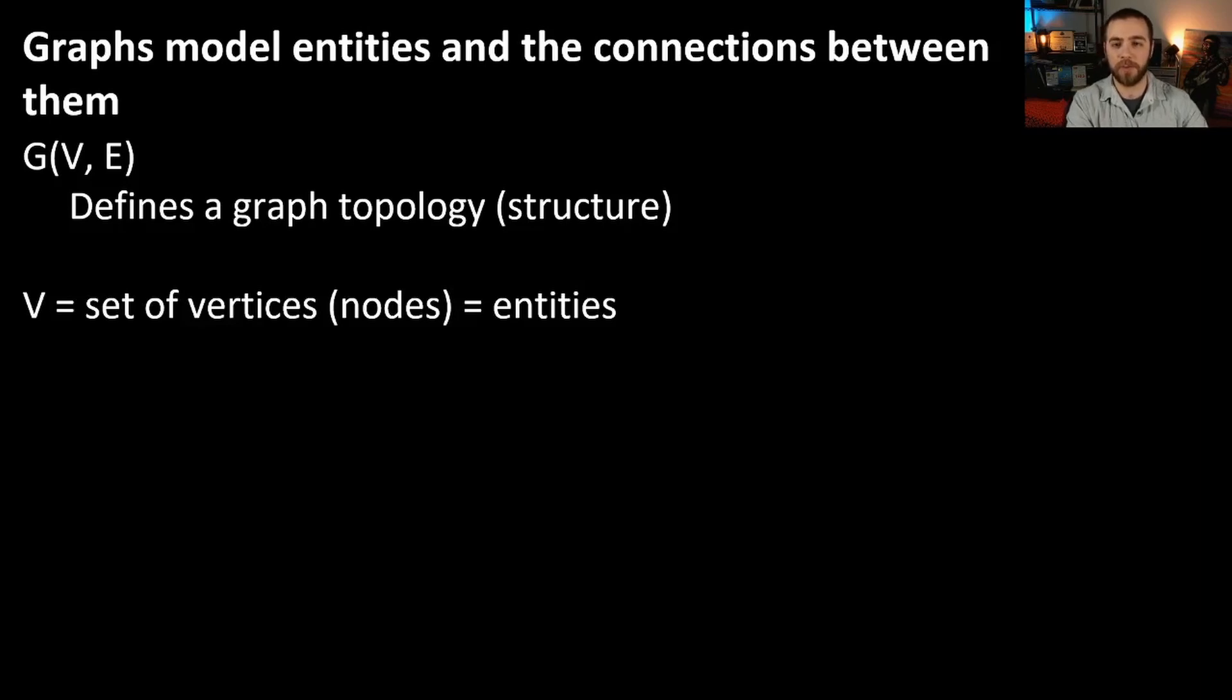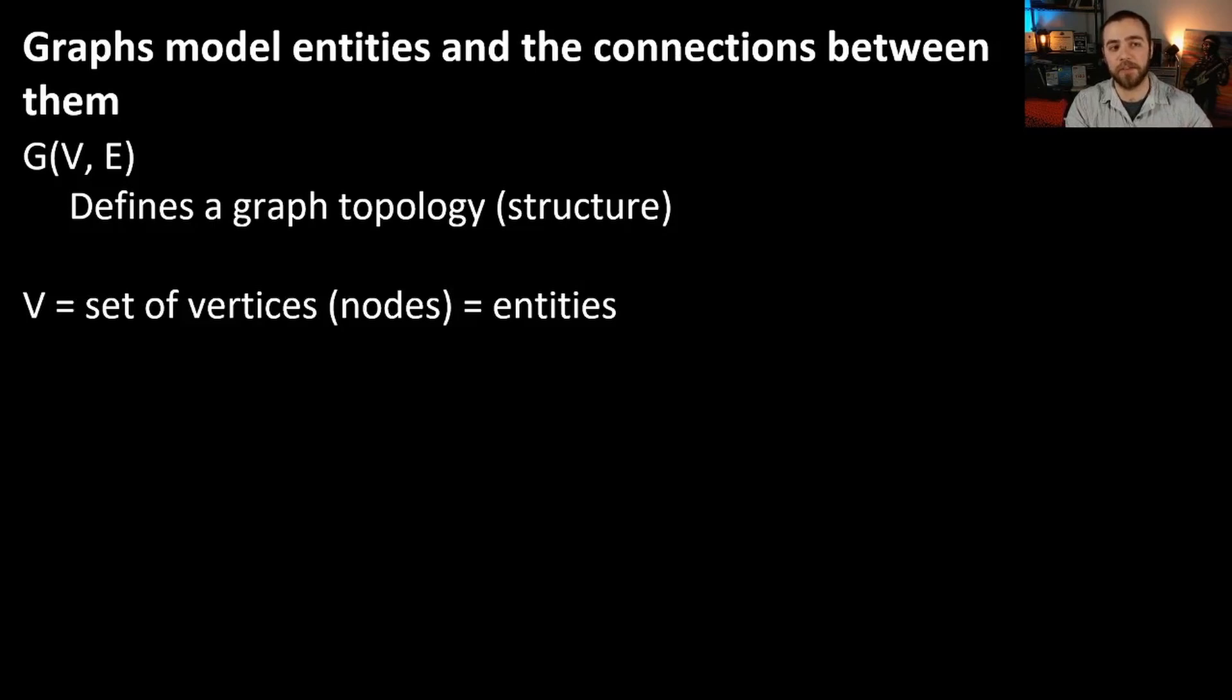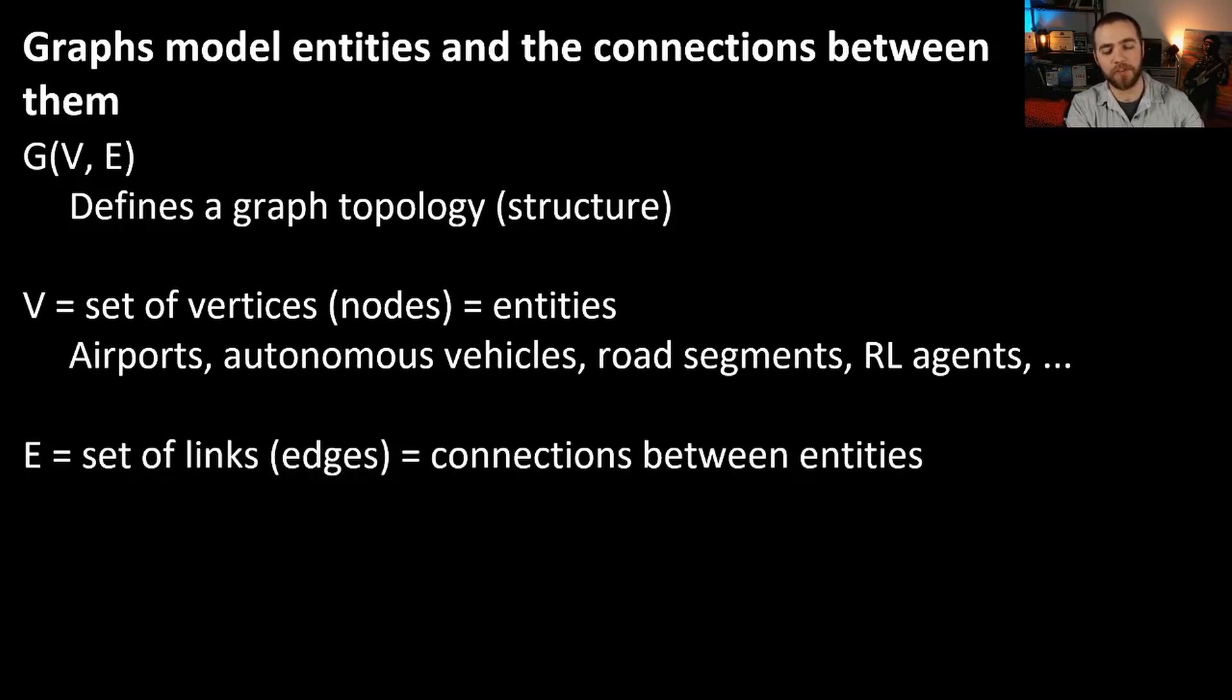But these two numbers define a unique graph topology or structure. Now we understand v to be the set of vertices or nodes on this graph, and you can understand these as entities. So this might be like airports in a network, autonomous vehicles, road segments on a road, or reinforcement learning agents, anything that you can really imagine. And then e is a set of links or edges, and these are some type of connection between entities. So this might be the distance between two airports, some type of correlation. There's many different ways that you can define a connection between entities.